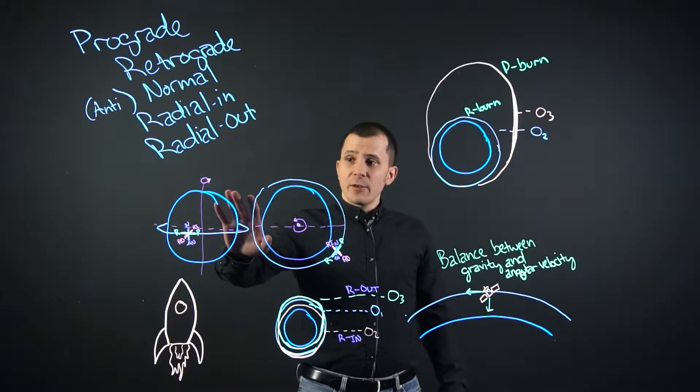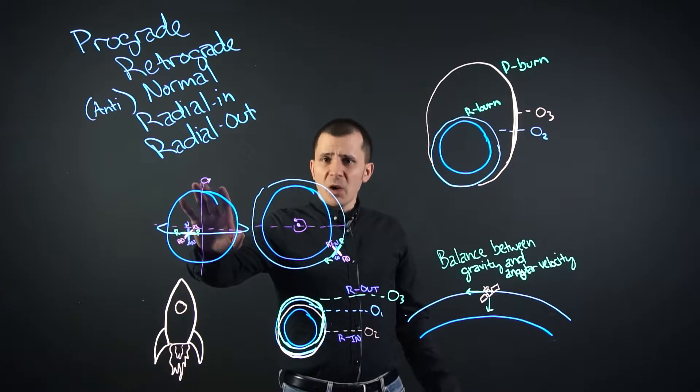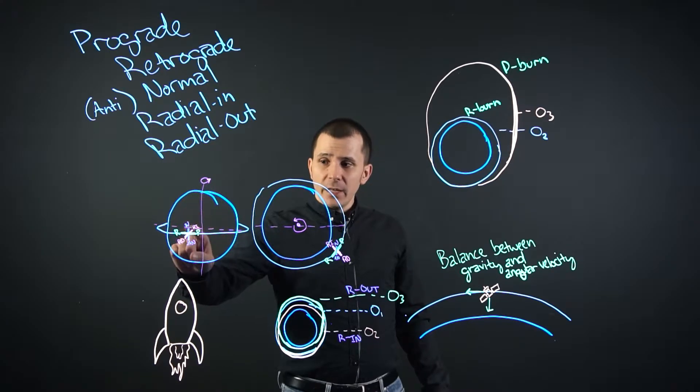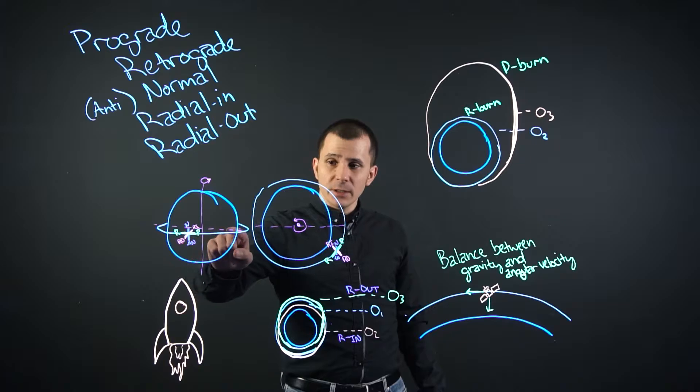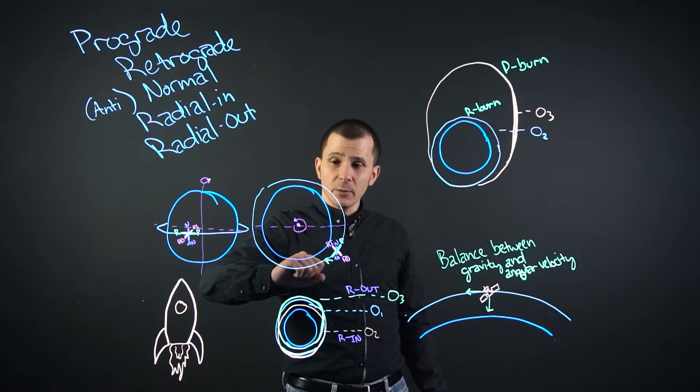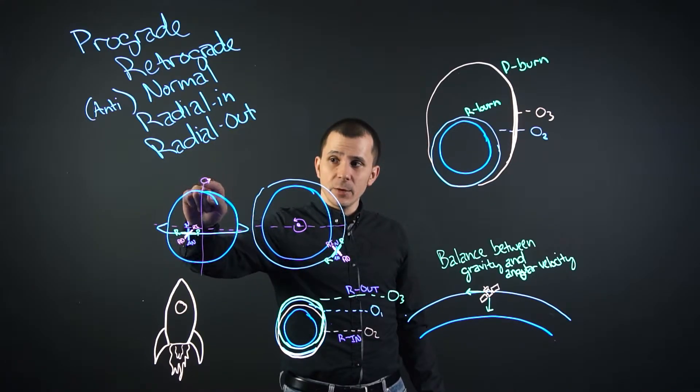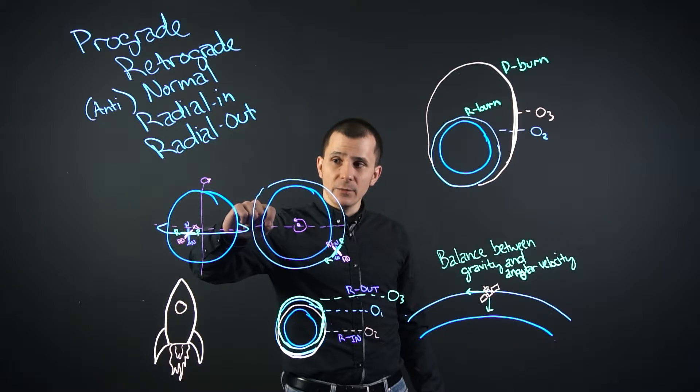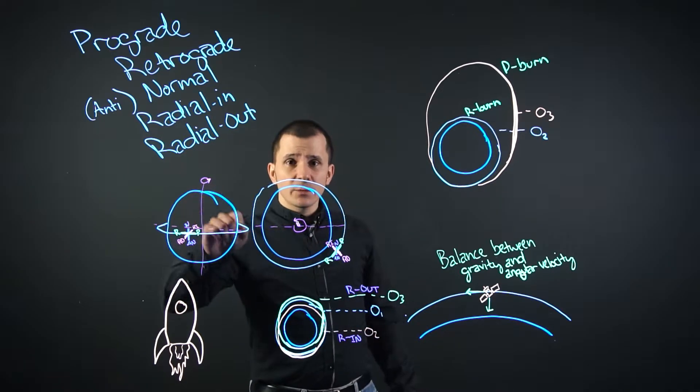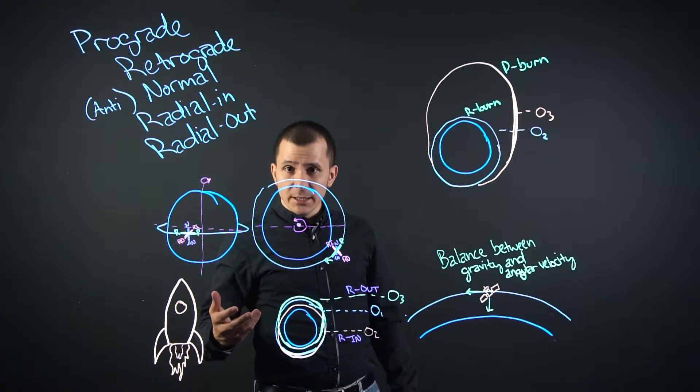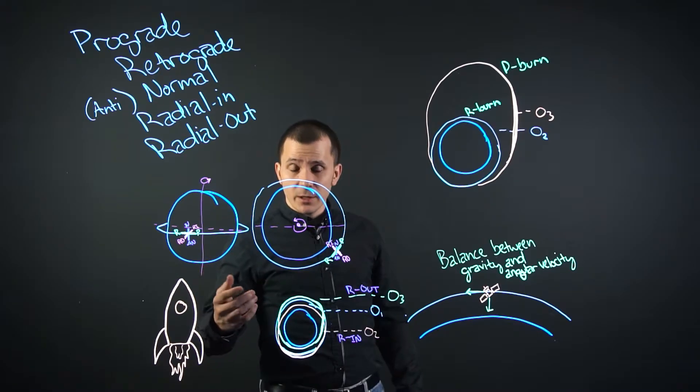So to get started, we have a diagram here of the Earth or another object in space with something orbiting around it. Here we have an axis across the Earth just so we understand where we're looking at, and up here is the rotational axis of the object. In this case, we're going to be using the same rotational axis as the parent object itself.